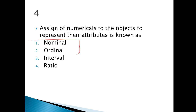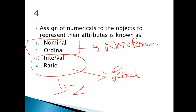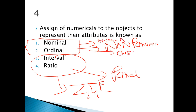For example, one person's weight is 100 kg and another's is 500 kg — you can say it is 5 times more. So ratio is the best measure. In terms of parametric and non-parametric: nominal and ordinal data come under non-parametric. Interval and ratio come under parametric. Parametric tests include z-test, t-test, and f-test. Non-parametric tests include ANOVA, chi-square, Mann-Whitney U test, and Kruskal-Wallis test.